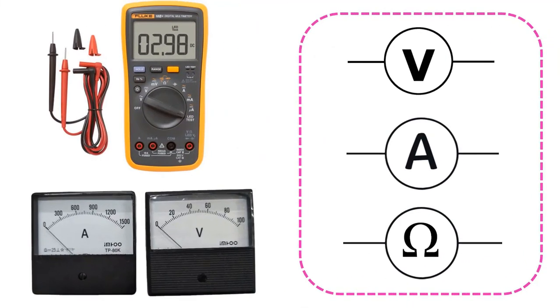For voltmeters, ammeters, and ohmmeters used in voltage, current, and resistance measurement, they are indicated by symbols with their initials in circles. Voltmeter is connected in parallel, while ammeter is connected in series.